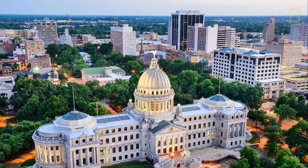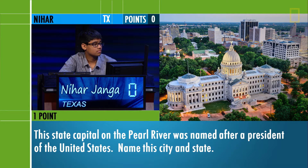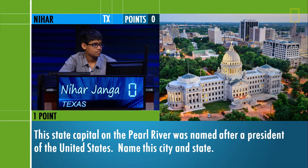This state capital on the Pearl River was named after a president of the United States. Name this city and state. Jackson, Mississippi. That is correct for one point.